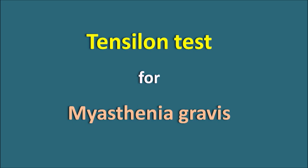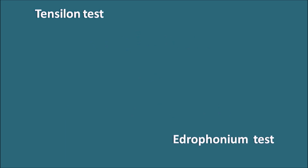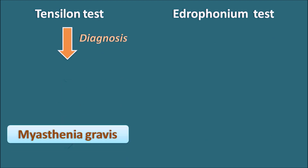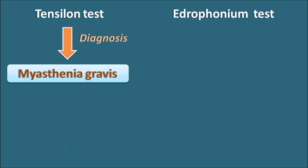The Tensilon test for myasthenia gravis. The Tensilon test is also called the Edrophonium test, and this test is used for the diagnosis of myasthenia gravis.